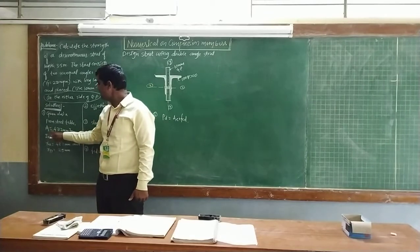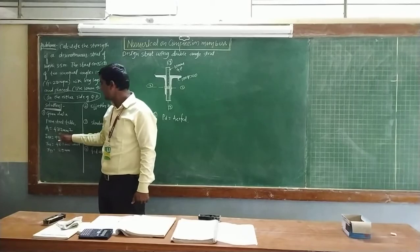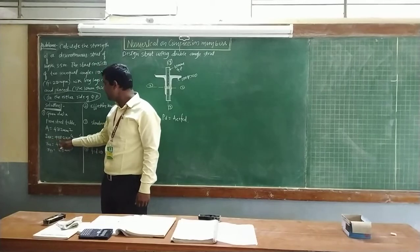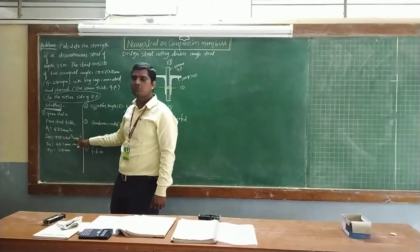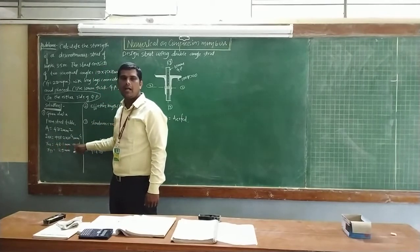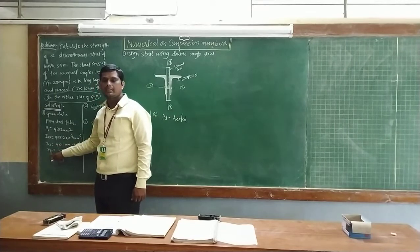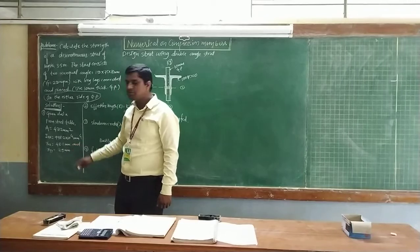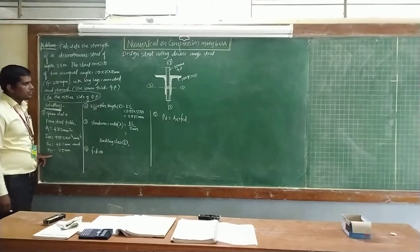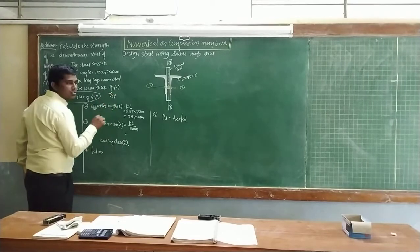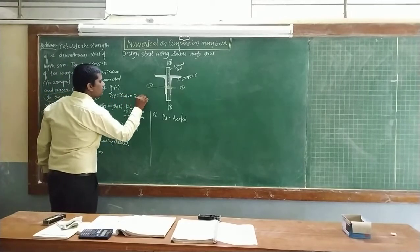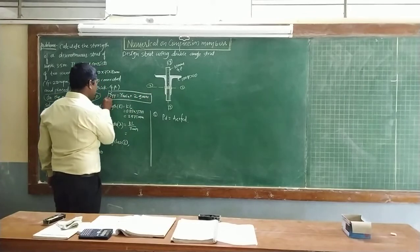From the steel table, we find out the properties. The cross-sectional area is 4,320 mm squared. Moment of inertia about the x-axis is 998.2 into 10 to the power of 4 mm to the 4th. The radius of gyration about x-axis is 48.1mm and about y-axis is 29mm. Out of these two radii of gyration, the radius about y-axis is equal to r minimum, which is 29mm. So this value we are going to select.